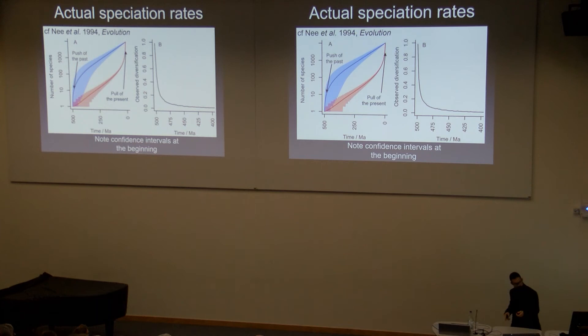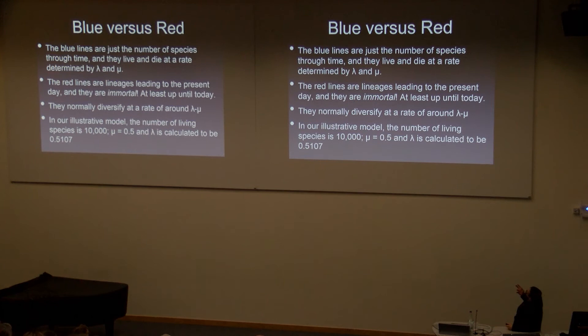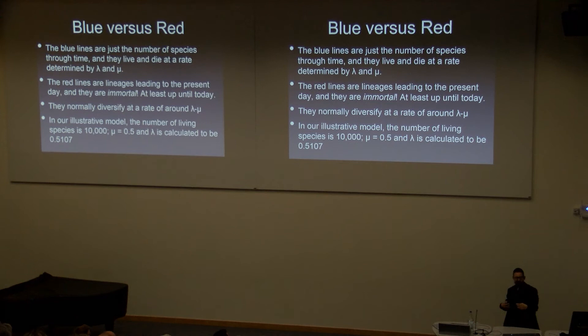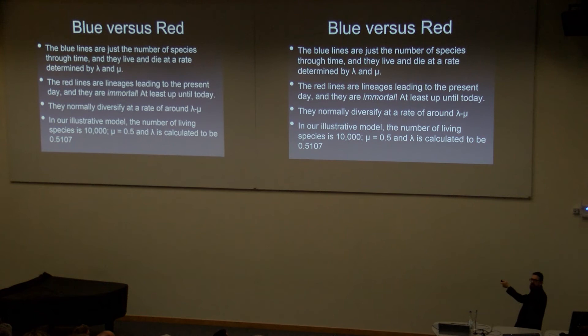To summarize: the blue lines are just the number of species through time, and they live and die at a rate determined by lambda and mu. The red lines are the immortal lineages leading to the present day - they have to be immortal because we recognize them retrospectively, drawing lines backwards from things that survive today. They normally diversify at the rate of lambda minus mu. In our model, we have 10,000 species, mu is 0.5 - meaning each species lasts about 2 million years on average - and lambda is calculated to about 0.5107.